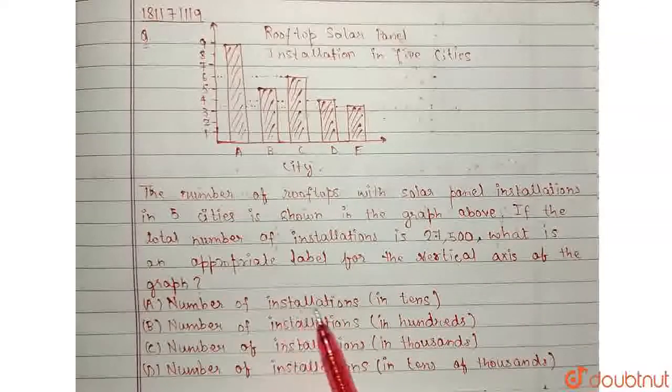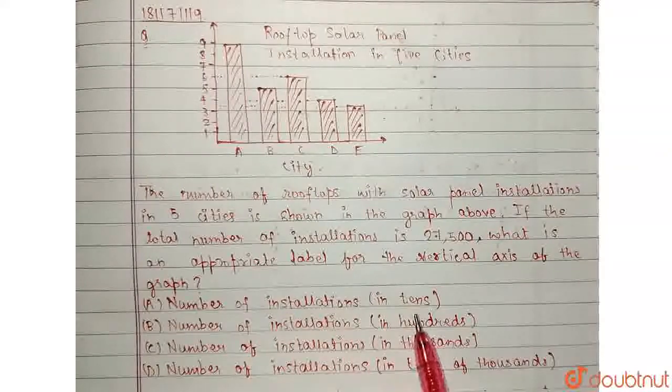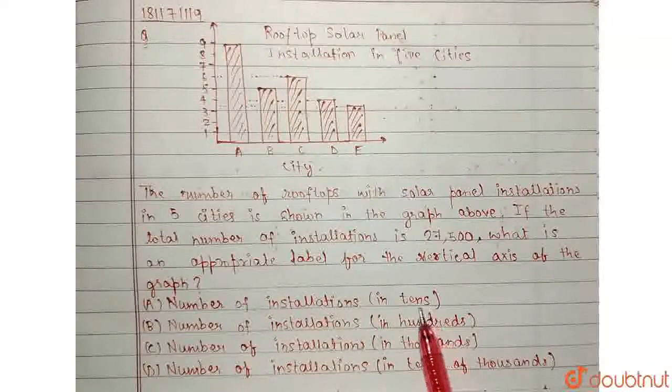Now, seeing the options, we can say that the label is number of installations, but we have to know what is the multiplication factor - that is tens, hundreds, thousands or ten thousands.